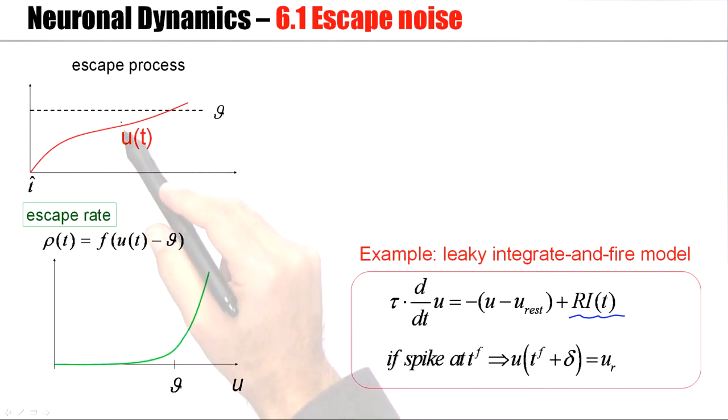And then I say, even though the trajectory hasn't reached the firing threshold yet, there's already an instantaneous escape across the threshold leading to a rate of momentary spike firing, even though the deterministic part hasn't reached threshold.